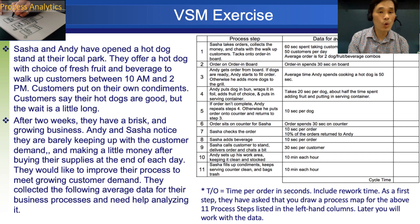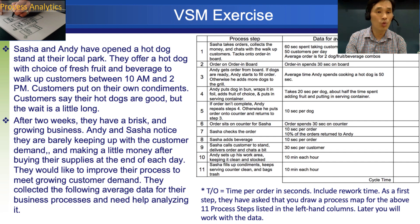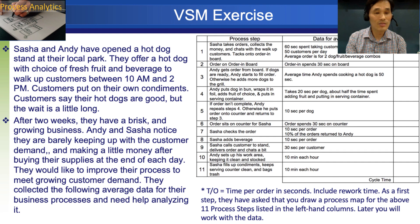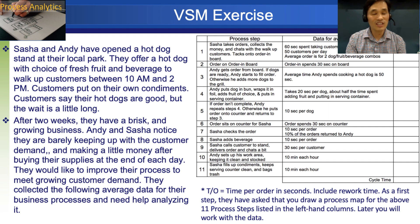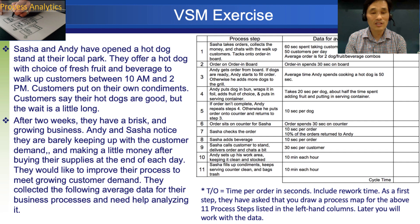Let us walk through these six steps using an exercise. Sasha and Andy have opened a hot dog stand at their local park. They offer a hot dog with a choice of fresh fruit and beverage to walk-up customers between 10 a.m. and 2 p.m. Customers put on their own condiments. Customers say their hot dogs are good, but the wait is a little too long. After two weeks, they have a brisk and growing business. Andy and Sasha notice they are barely keeping up with customer demand and making little money after buying supplies at the end of each day. They would like to improve their process to meet growing customer demand. They collected the following average data for their business processes — there are 11 processes listed in sequential order.